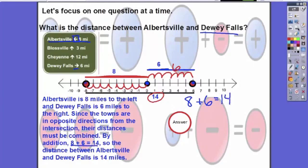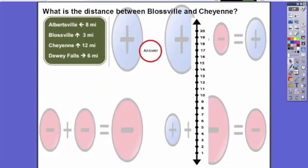Now the second part: what is the distance between Blossville and Cheyenne? First thing I want you to note is we have a vertical number line, meaning up and down. Why do you think we chose our vertical number line? We see the direction that the arrows point are up or north. I'm going to start at zero, and Blossville is three miles away.